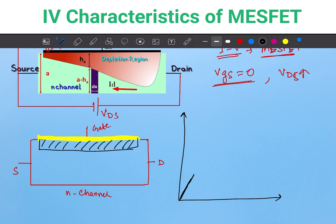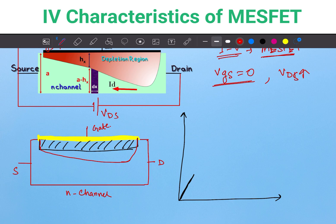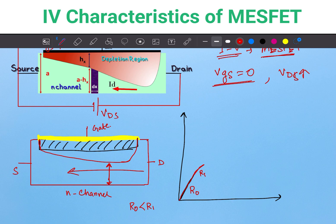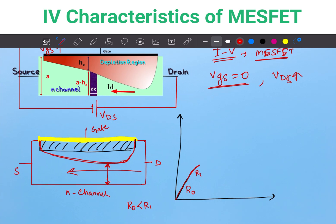If we increase VDS a little, current increases linearly. As we increase VDS further, the depletion region starts to grow. There is still enough space for current to flow, but the channel height is reduced, meaning resistance increases. If the resistance in the linear region is R0, it becomes R1 > R0, then R2 as VDS continues to increase.